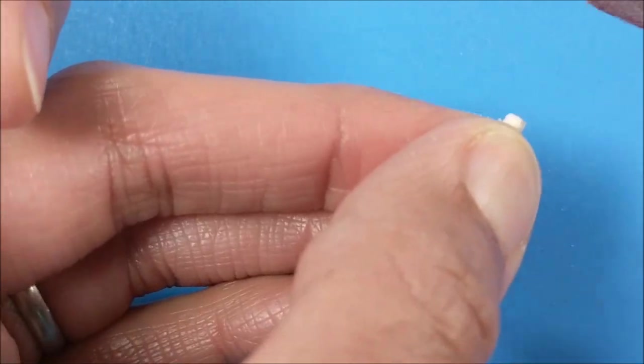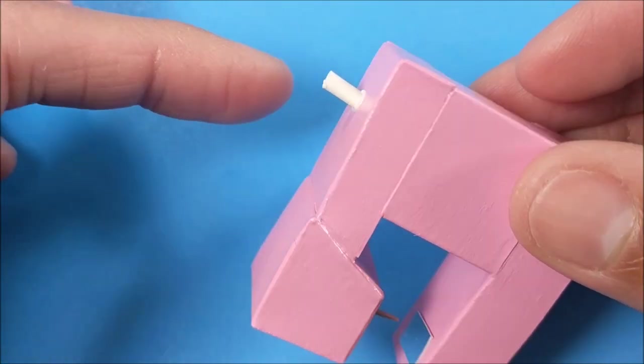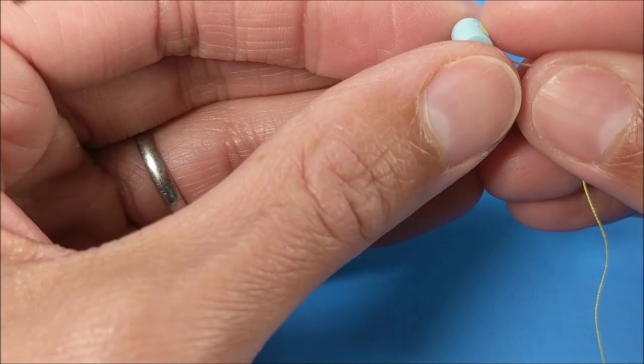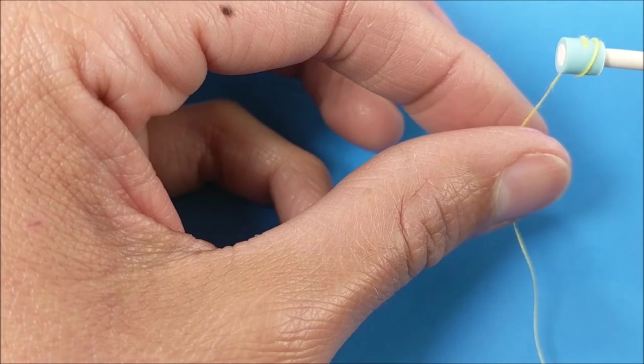Then I take some thread, glue it to my Perler bead, and wrap it around, gluing it in place at the end.